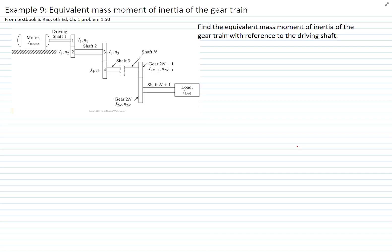In this problem we want to find the equivalent mass moment of inertia of a gear train. We will do this problem from n plus 1 number of shafts and 2n gears. Obviously a real system may have a finite number of shafts and gears,